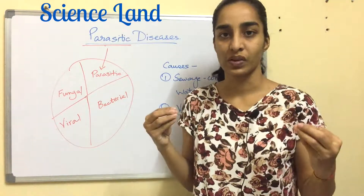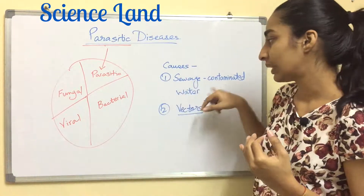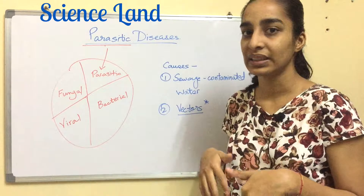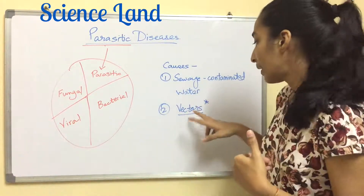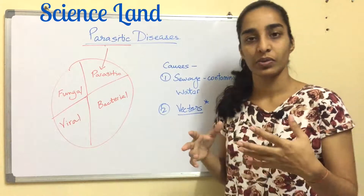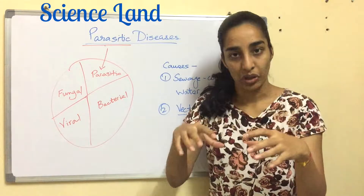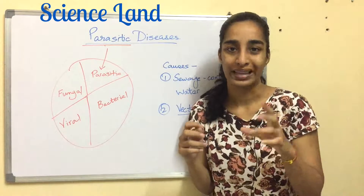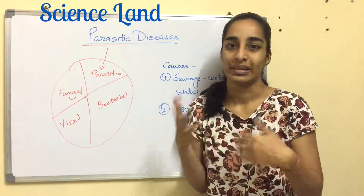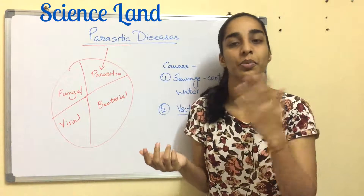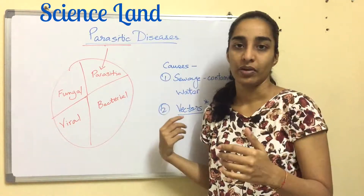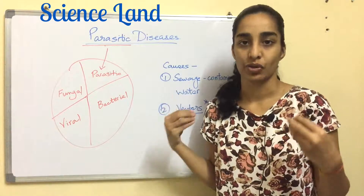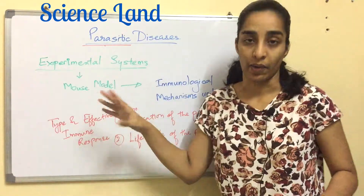Parasitic diseases have become a global burden compared to other types of diseases like fungal, viral, and bacterial. Parasitic diseases spread due to some causes. The first is sewage-contaminated water, wherein drinking water is contaminated with sewage and you get the infection. The second is vectors — vectors are mediators between the protozoa and the human. A vector provides a microenvironment necessary for the life cycle of the protozoa, which is one of the reasons why this is becoming such a huge global problem.